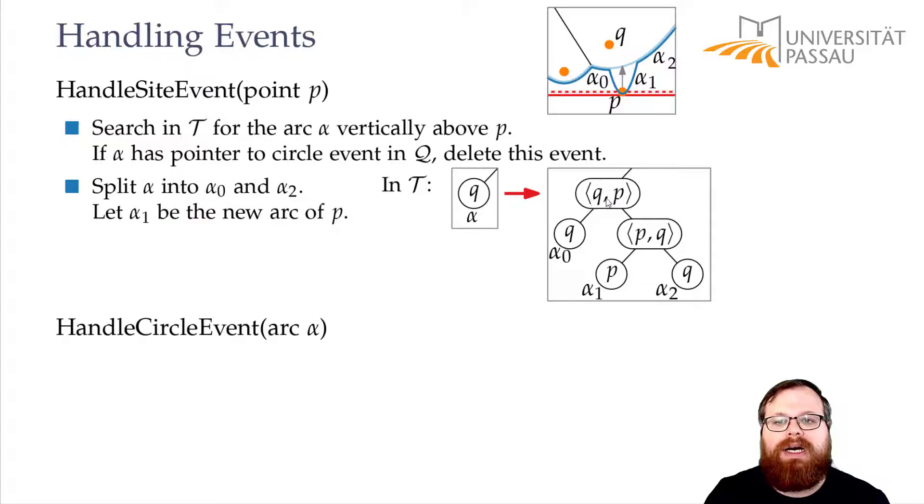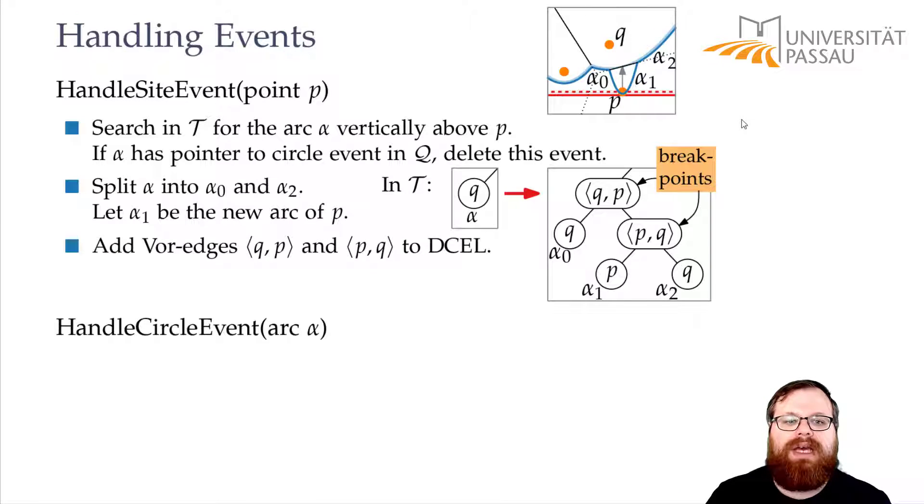We have to split it by q and p into the parabola alpha 0 that corresponds to q, then alpha 1 that corresponds to p and then alpha 2 that corresponds to q. So these are our new breakpoints. These are exactly these two points here where these parabolas meet. And these breakpoints, they define new Voronoi edges afterwards. Wherever two parabolas meet, that's where a new Voronoi edge starts. So we have to add the Voronoi edges qp and pq, that corresponds to these intersection points, to our Voronoi diagram.